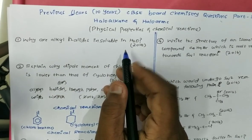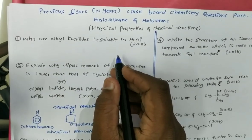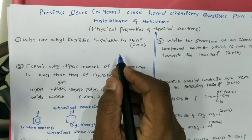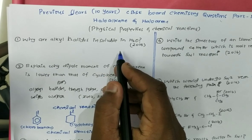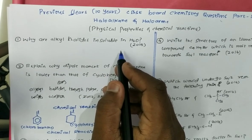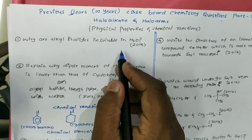The first question is: why are alkyl halides insoluble in water? Alkyl halides are polar molecules and water is also a polar molecule, so it should dissolve — but it does not. Why does it not get dissolved?